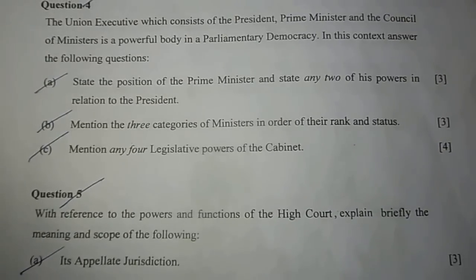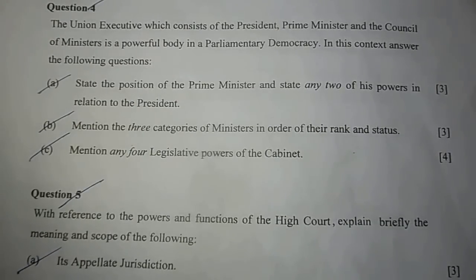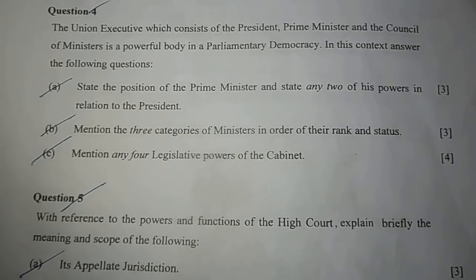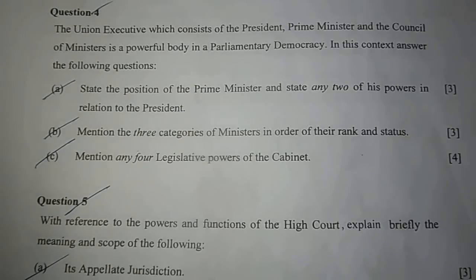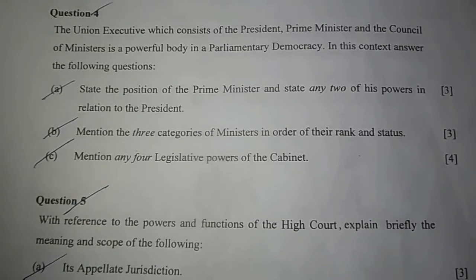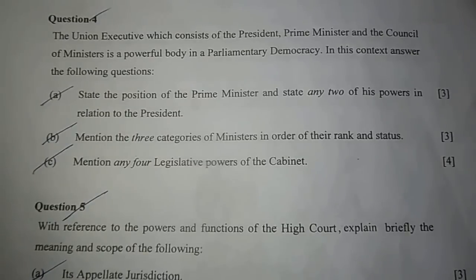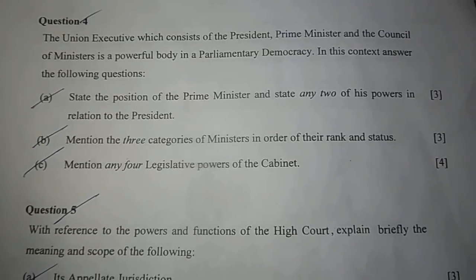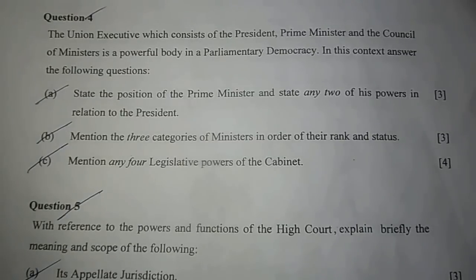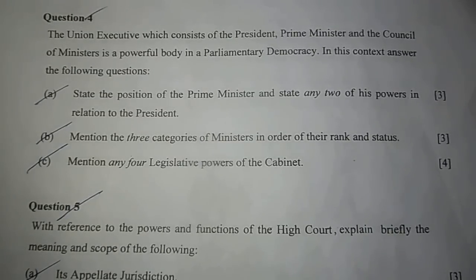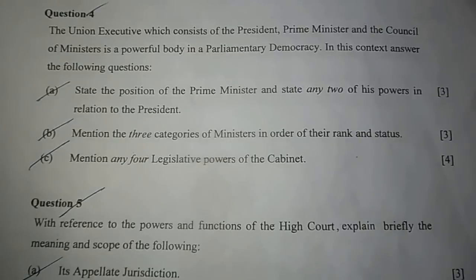Question 4. The union executive, which consists of the president, prime minister, and the council of ministers, is a powerful body in a parliamentary democracy. A. State the position of the prime minister and any two of his powers in relation to the president. The prime minister is the head of the council of ministers and the leader of the party or coalition which commands a majority in the Lok Sabha — he is the executive head. Number 1: The prime minister is the link between the president and the council of ministers. Number 2: It is on the advice of the prime minister that the president summons, prorogues, or dissolves the Lok Sabha.